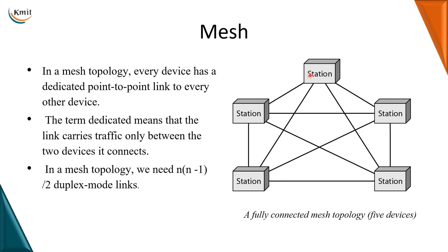The word dedicated here means that the link carries data traffic only between the two stations it is connecting. If I want to know the number of duplex links needed for connecting five devices in a station, the formula would be n into n minus 1 by 2. Now, if we have five devices in the station, as you can see in this diagram, we have five devices in the network.